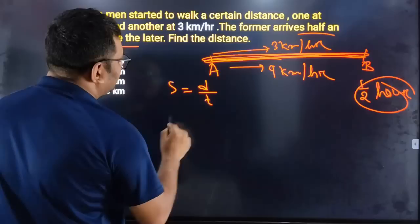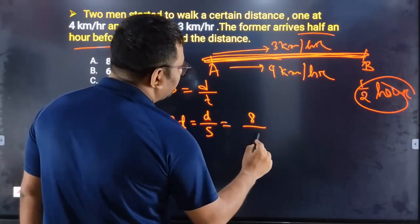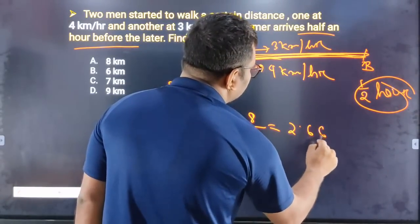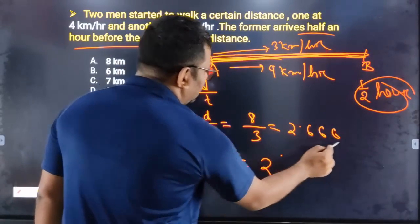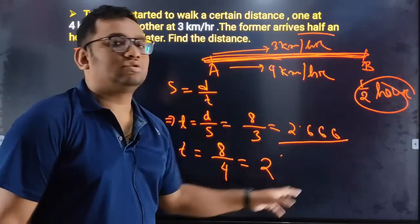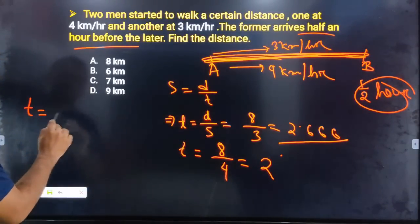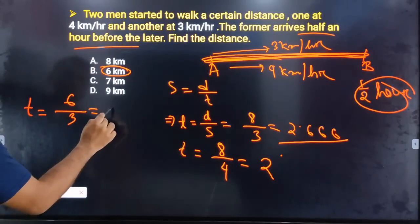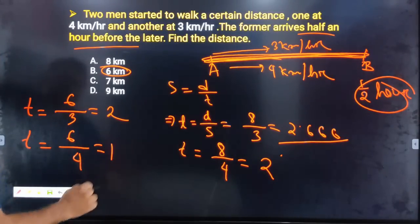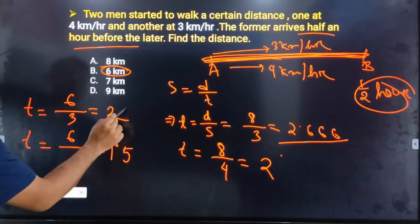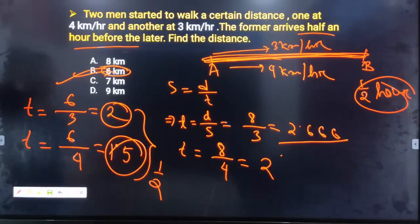Speed is equal to distance divided by time; time is equal to distance divided by speed. Suppose option B is 6. Time equals 6 divided by 3, which is 2. Time equals 6 divided by 4, which is 1.5. The difference is 2 minus 1.5 equals 0.5, which is half an hour. Therefore option B is the correct answer.